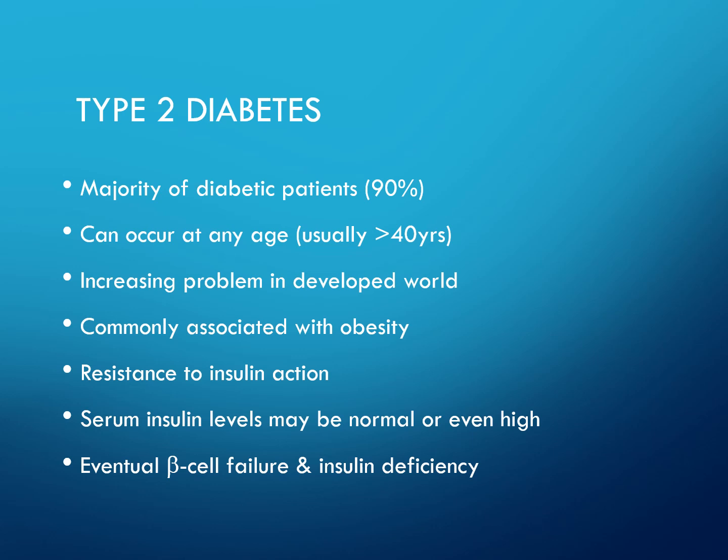The majority of diabetic patients — 90% — have type 2 diabetes. It can occur at any age, but usually in those greater than 40 years old. There is an increased prevalence in the developed world, and it is commonly associated with obesity. It results from resistance to insulin action; insulin levels may be normal or even high, but eventually beta cell failure and insulin deficiency occurs.